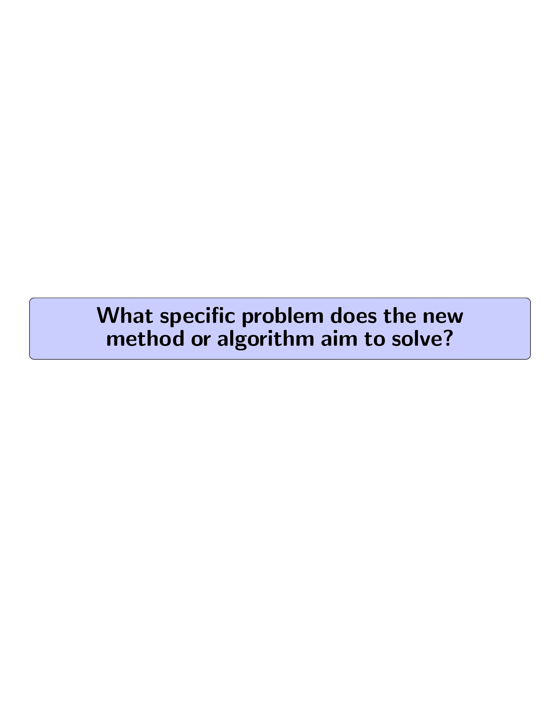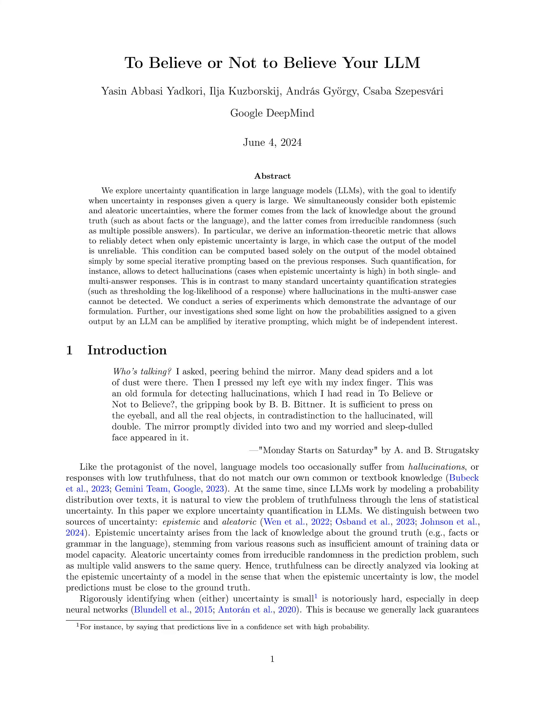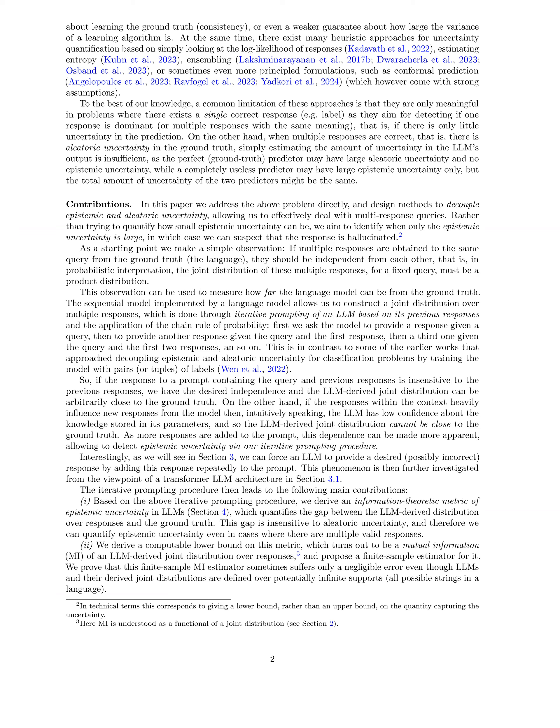The new method aims to solve the problem of hallucinations in language models by detecting when the model provides incorrect or hallucinated responses. The method focuses on quantifying epistemic uncertainty in the model's predictions, which arises from a lack of knowledge about the ground truth. By decoupling epistemic and aleatoric uncertainty, the algorithm can effectively deal with multi-response queries and identify when the model's uncertainty is primarily due to lack of knowledge rather than randomness.